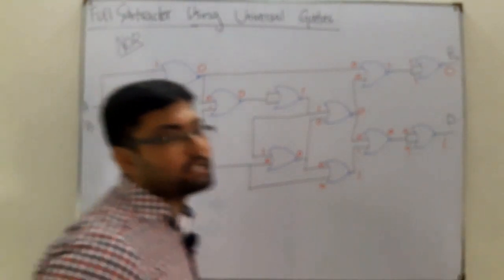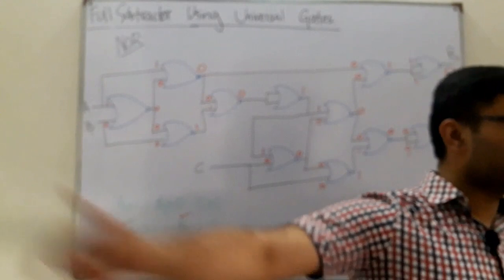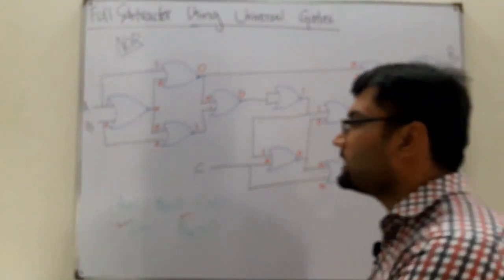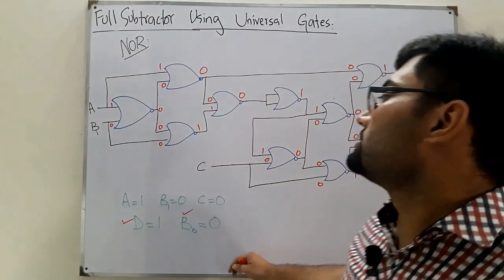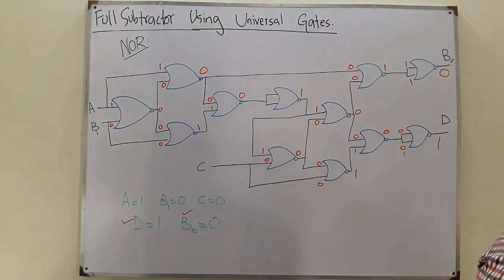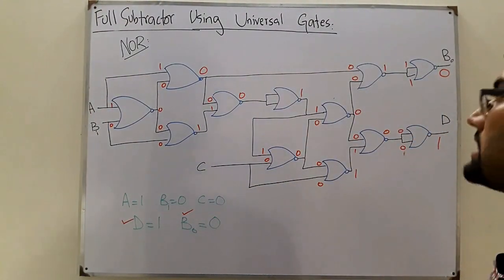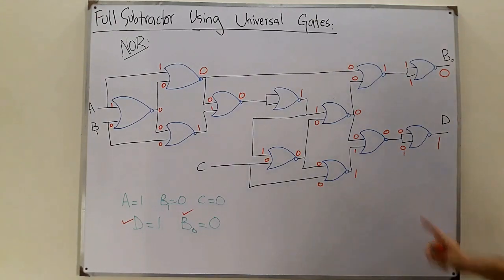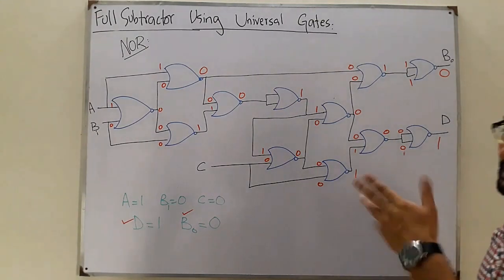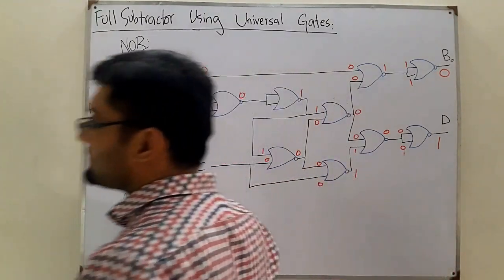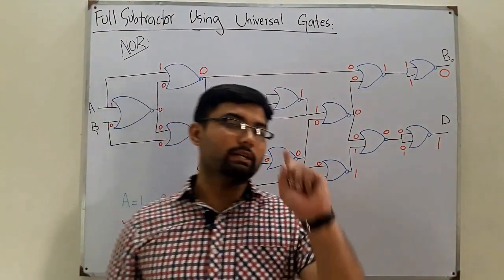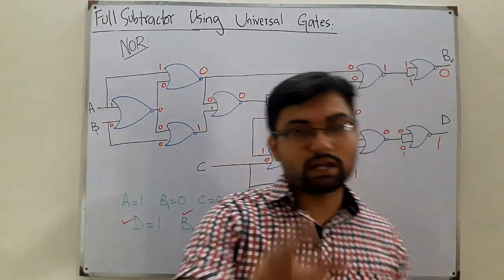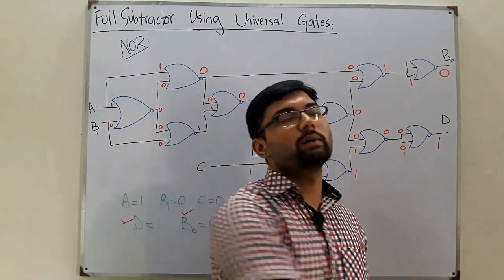That's all for now — I'm a bit tired, so I can't do another example. Try A=0, B=1, C=1 on your own and verify the output. This concludes full subtractors using universal gates. See you in the next lecture soon, inshallah. Take care of yourselves and everyone around you, and do subscribe to the YouTube channel. Goodbye.